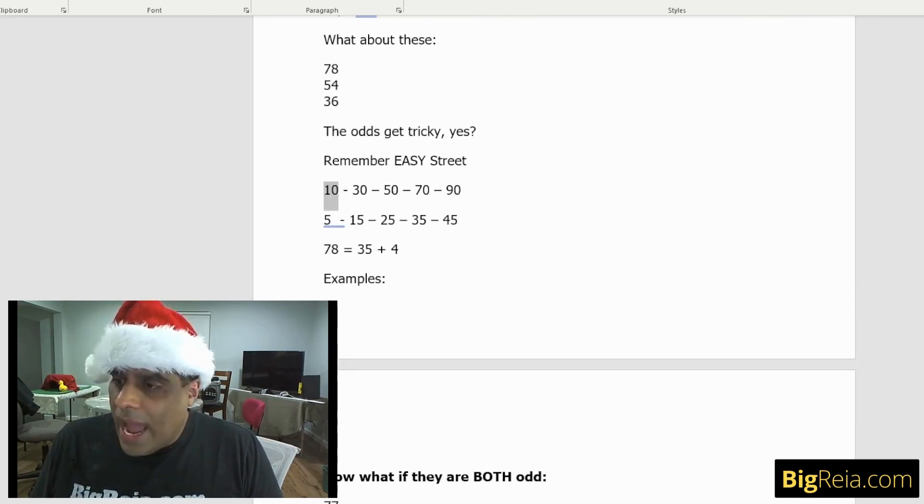The way we do this is look at 10. Anytime you have 10, half of that is going to be five. Anytime you have 30, half of that's going to be 15. When you have 50, half of that is 25 something. Anytime you have 70, half of that's 35. 90, it's 45. So for example, the number 78, it's going to be 35 plus something.